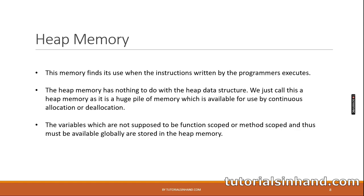Heap memory finds its use when the instructions written by programmers execute. The heap memory has nothing to do with the heap data structure — it is simply a huge pile of memory available for continuous allocation or deallocation. Variables which are not function-scoped or method-scoped and must be available globally are stored in heap memory. An important interview question: if a variable is function-scoped, it is stored in stack memory; if a variable needs to be globally scoped, it is stored in heap memory.